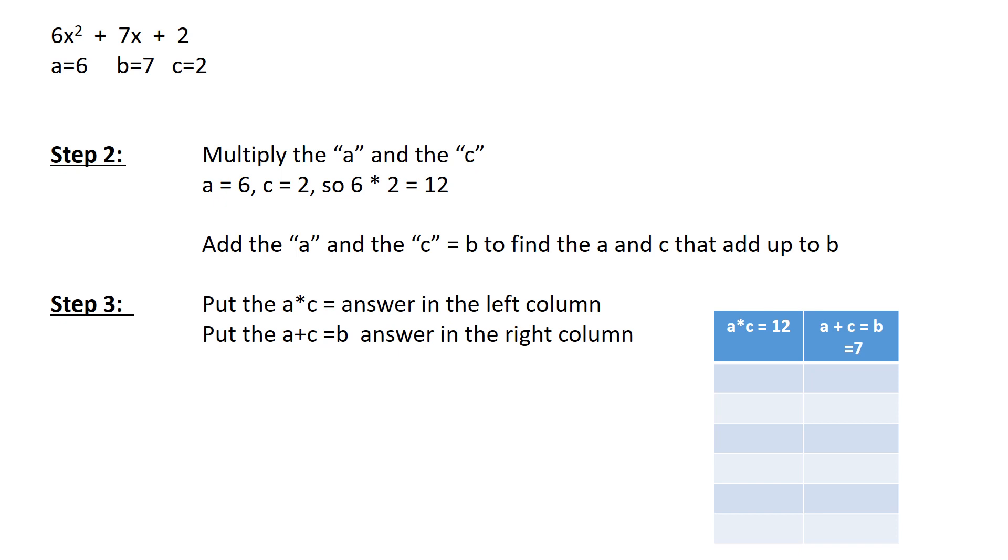We're using this A, B, and C from our equation above. Again, where A is 6, our B is 7, our C is 2. A times C in this case would be A is 6, C is 2. So 6 times 2, which equals 12.